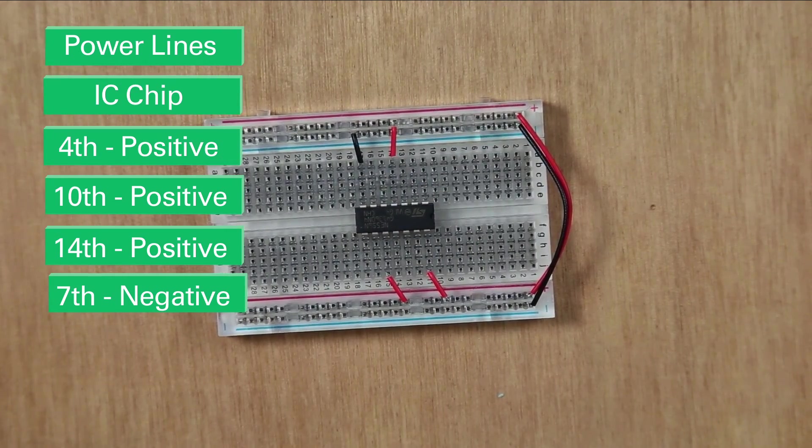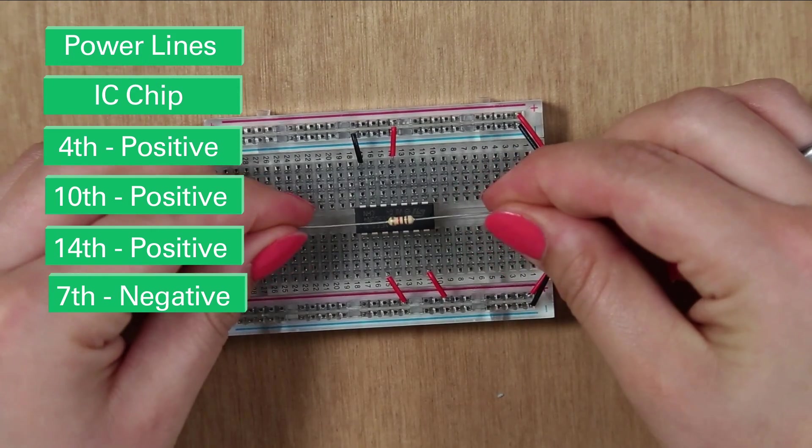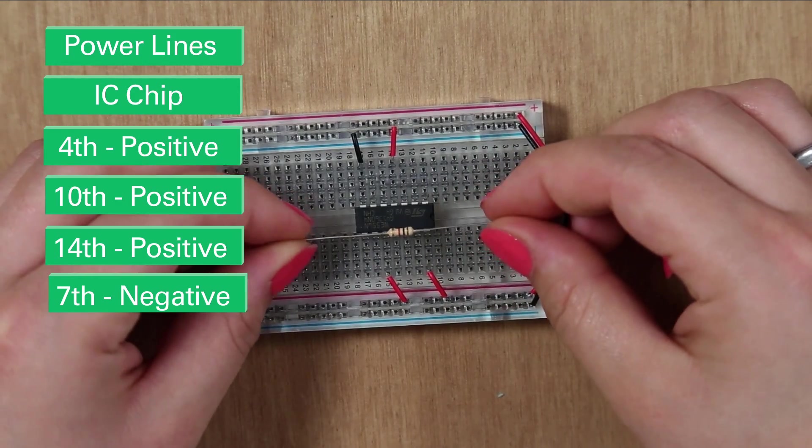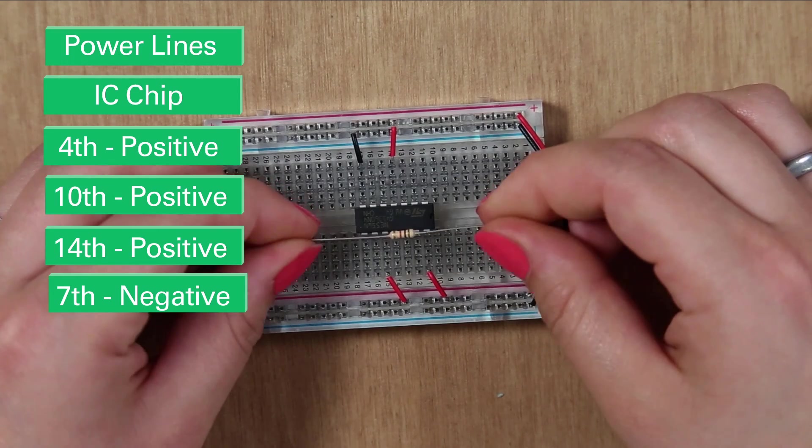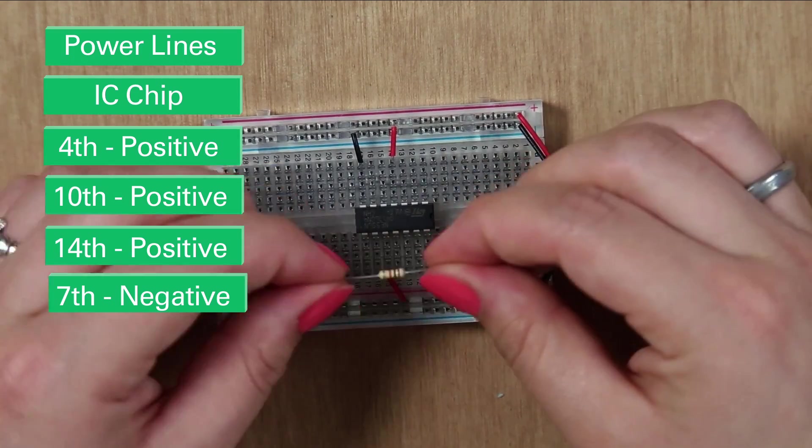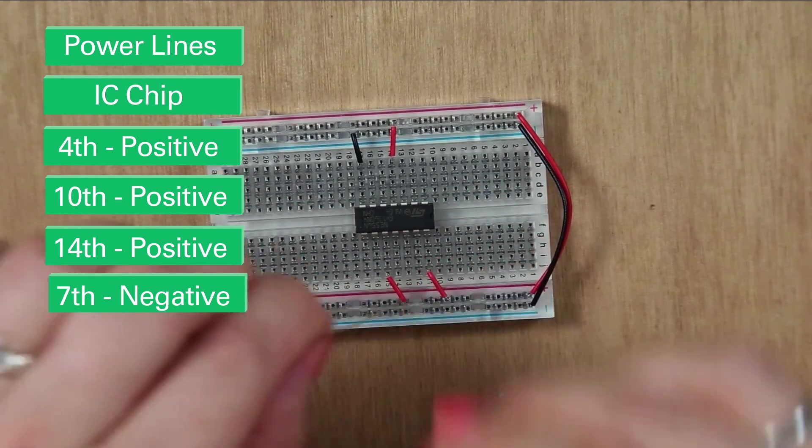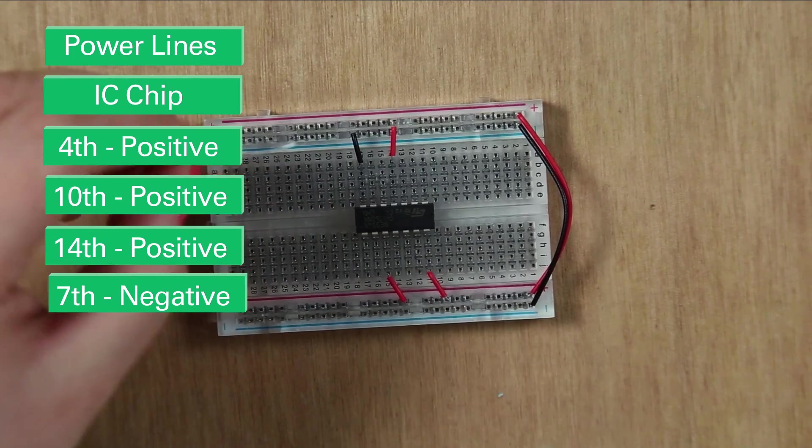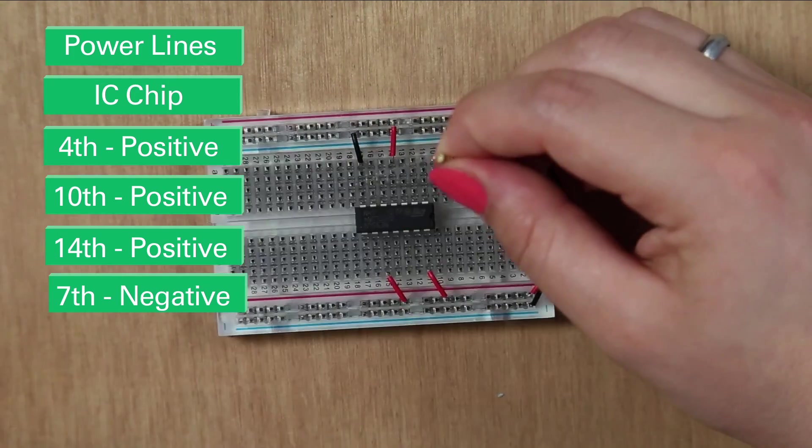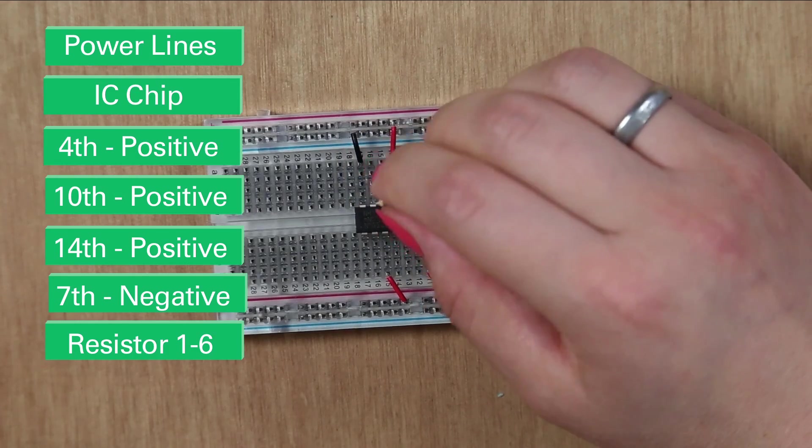So the next thing you want to do is add your resistor, which is this component. So it has a brown, black, red and gold stripes on it, which means that it's a 7 kiloohm resistor. So we just want to bend the legs 90 degrees. Like that. And then stick it in from pins 1 to 6. So 1, 2, 6. Like that.